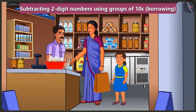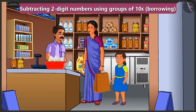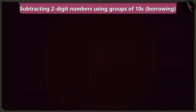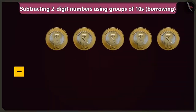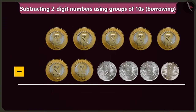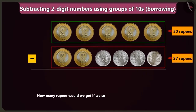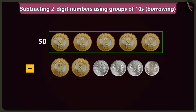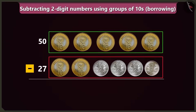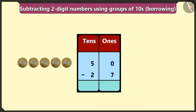Brother, what is the price of one packet of milk? One packet is twenty-seven rupees. Take this, fifty rupees. Mummy, uncle said to give twenty-seven rupees for the milk — then why are you giving him fifty rupees? Bubbly, uncle will subtract twenty-seven rupees from fifty rupees and give the rest of the money back. How many rupees would it be if we subtract twenty-seven from fifty? Fifty means five tens, and twenty-seven means two tens and seven ones. Let's do the subtraction after writing them in the boxes of ones and tens.